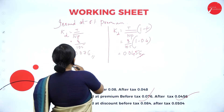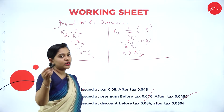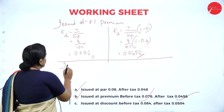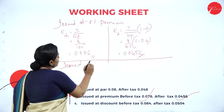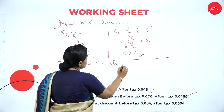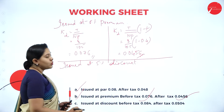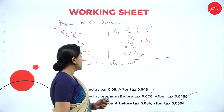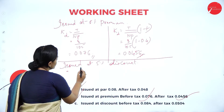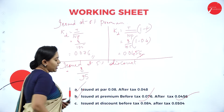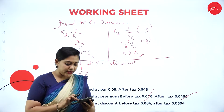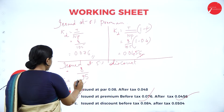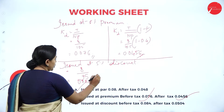Next, we calculate issued at a discount of 5%. 100 into 5% is Rs. 5; if you subtract from 100, 95 rupees will be the net proceeds. The formula is the same: interest is Rs. 8, net proceeds is 95. Using the calculator: 8 divided by 95 gives a cost of debt of 0.0842. That is the before tax answer for issued at a discount.